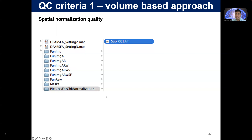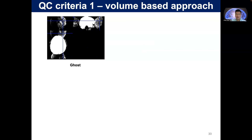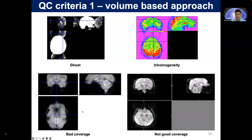We also have another spatial normalization quality control check. In the pictures for checking normalization, you can open the images with a template as underlay and the image-space BOLD image as overlay, to check the spatial normalization effects. This is for tracking whether the BOLD functional data is normalized well or not. You can also check the BOLD data for ghost, inhomogeneity, and bad coverage.